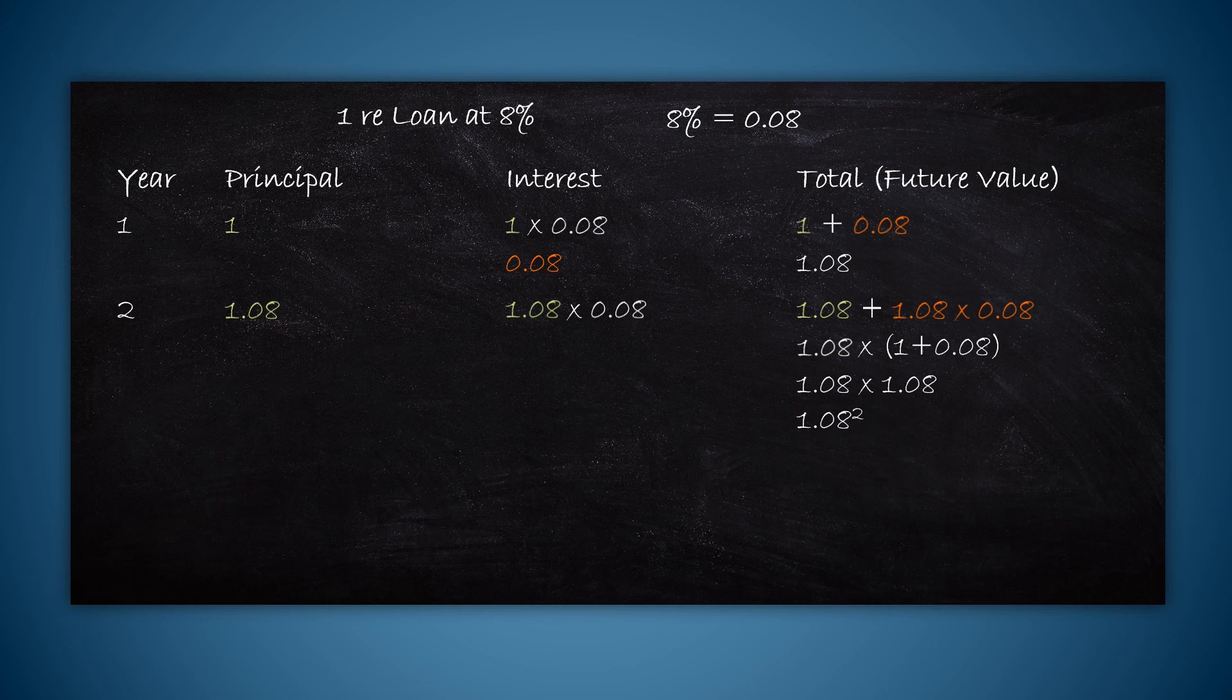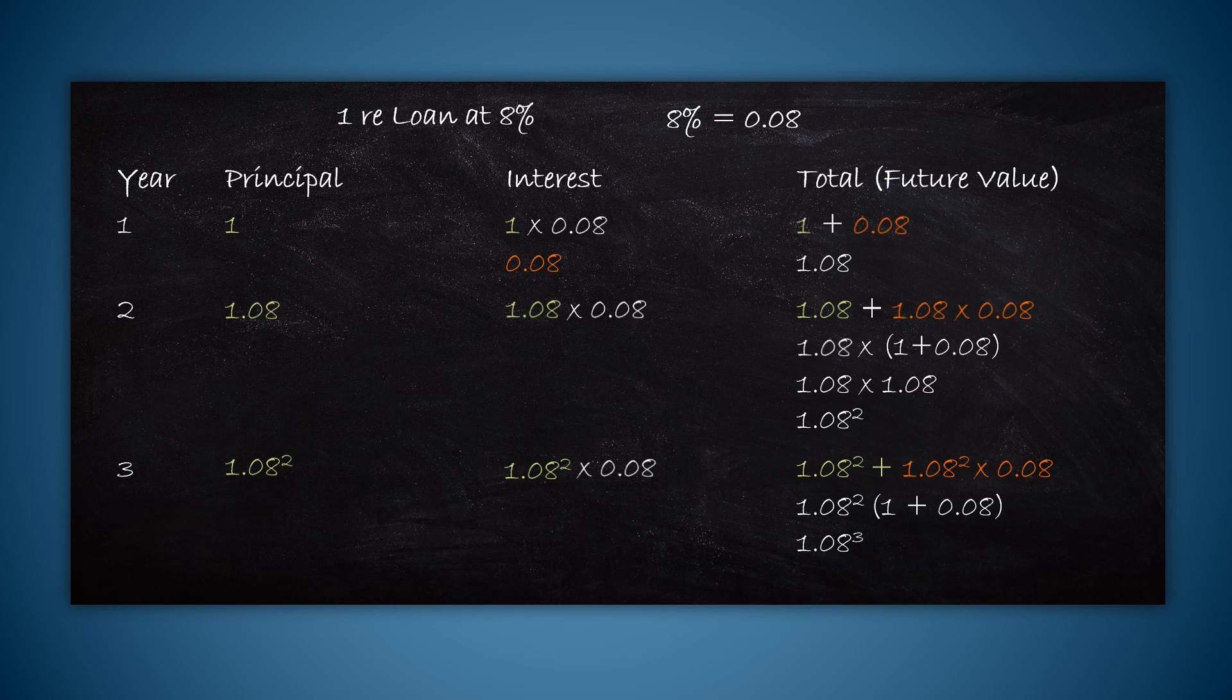So we have the future value for the second year. If we want to calculate the same thing for the third year, now the principal is 1.08 square. The interest will be 1.08 square into 0.08. The total amount now is 1.08 square plus 1.08 square into 0.08. Again we'll simplify this and it will become 1.08 to the power 3. To the power 3 means you have to multiply 1.08 with 1.08 three times. This final total is nothing but the future value.